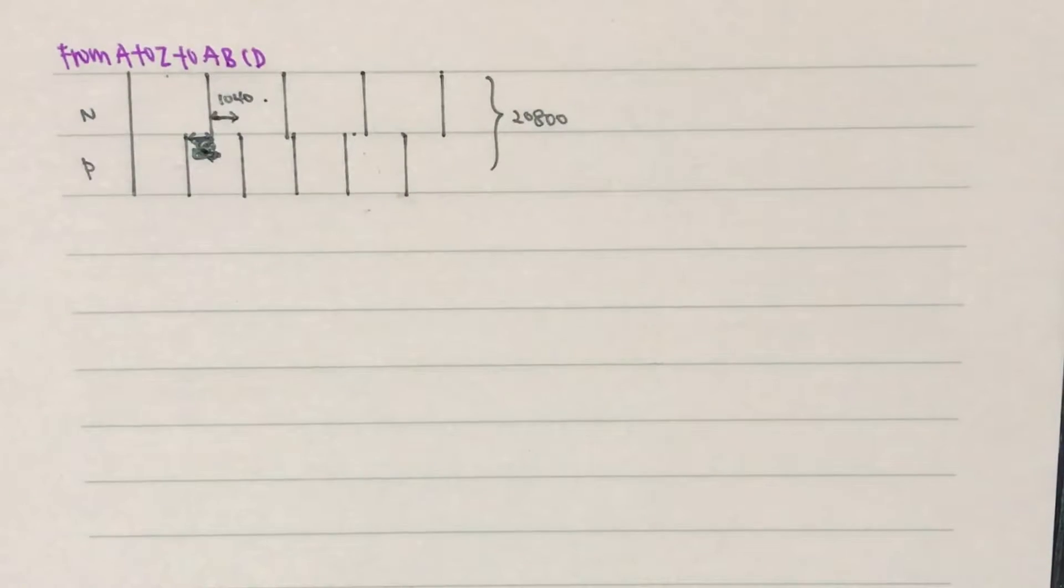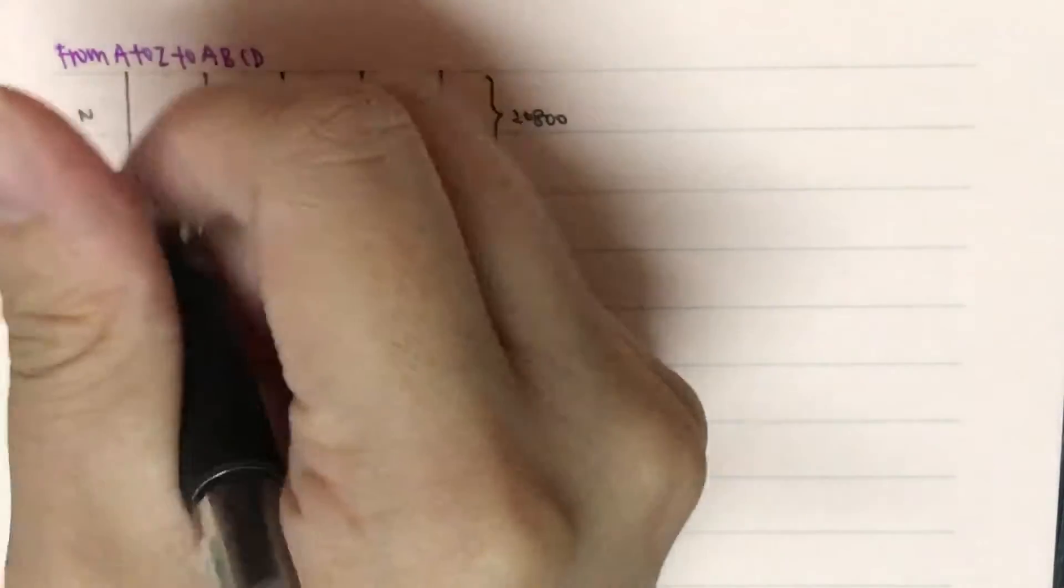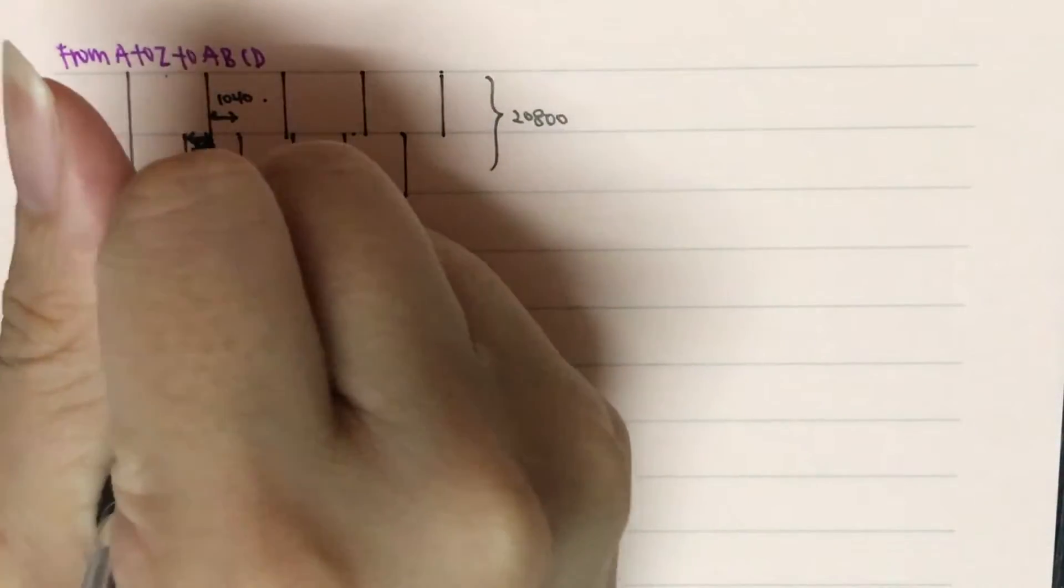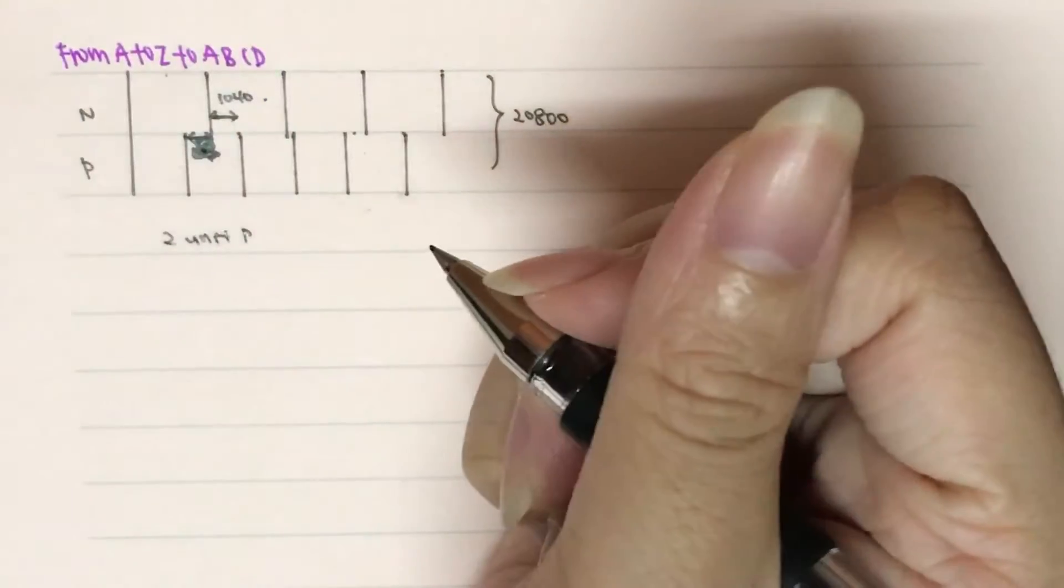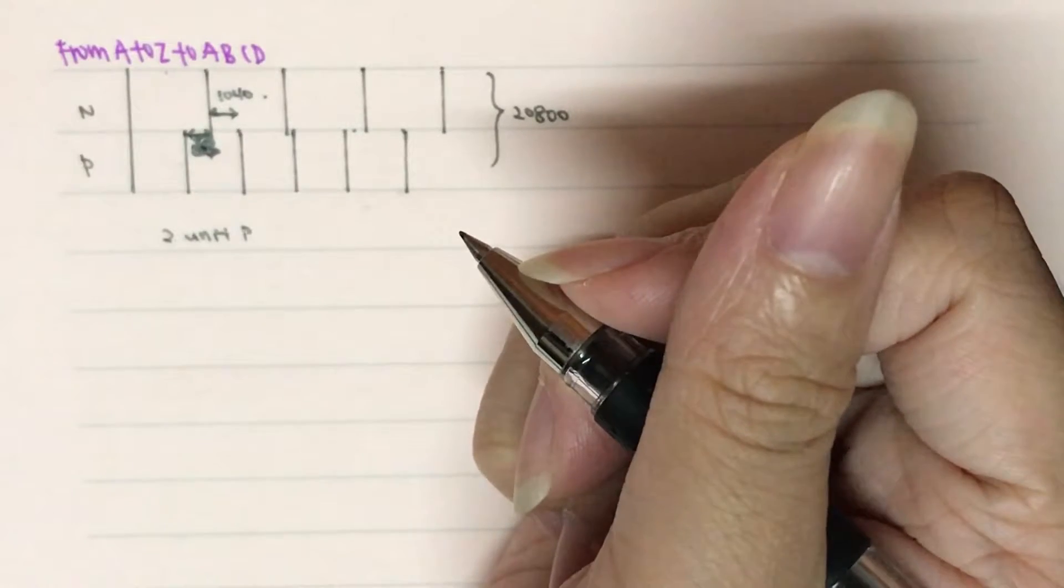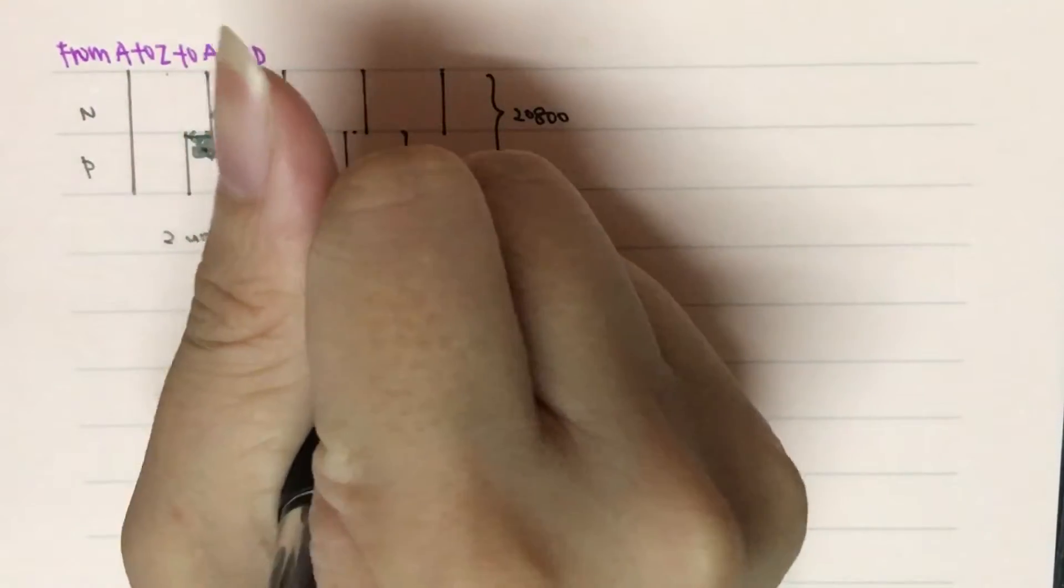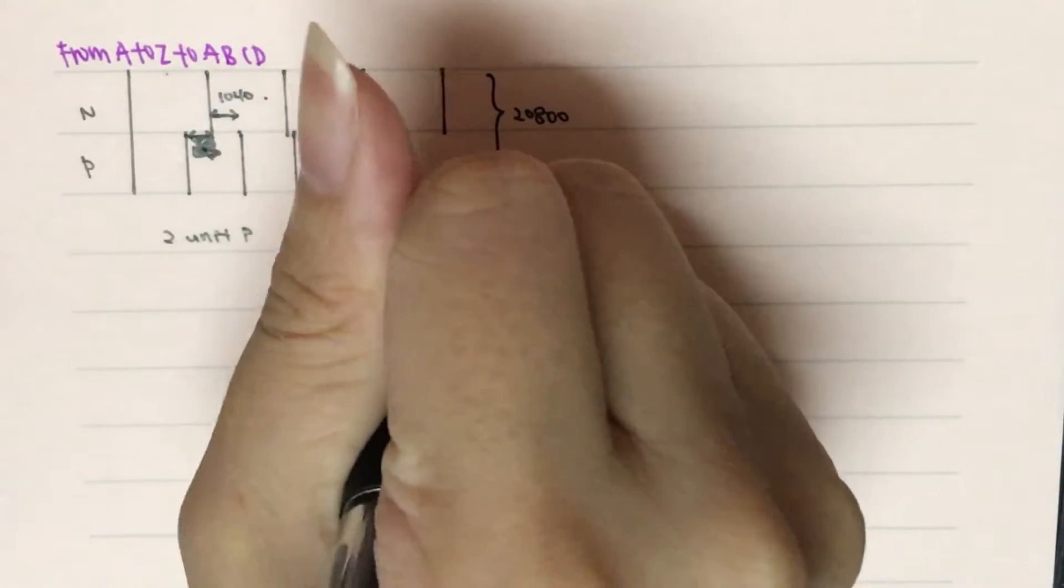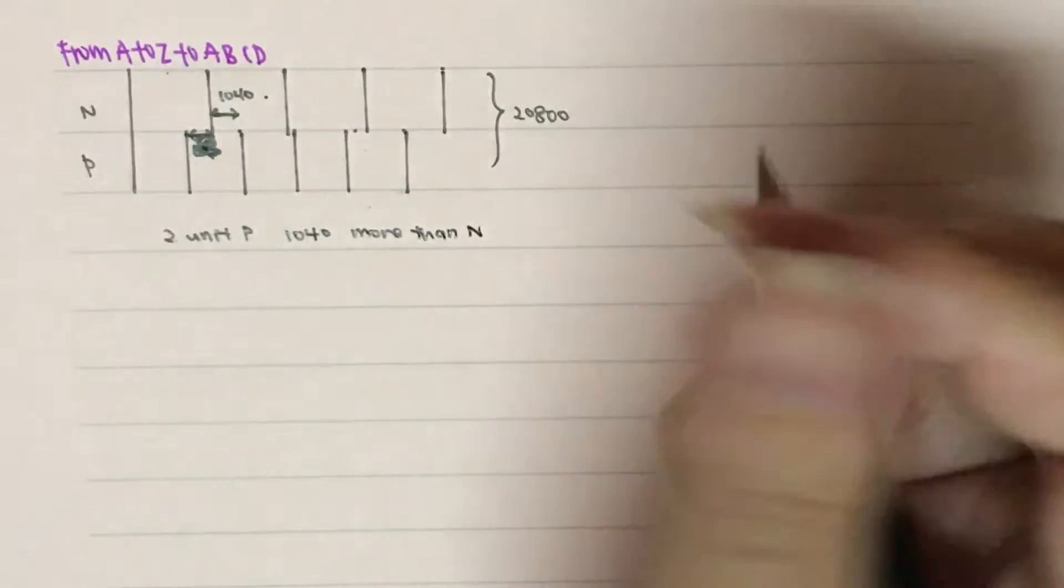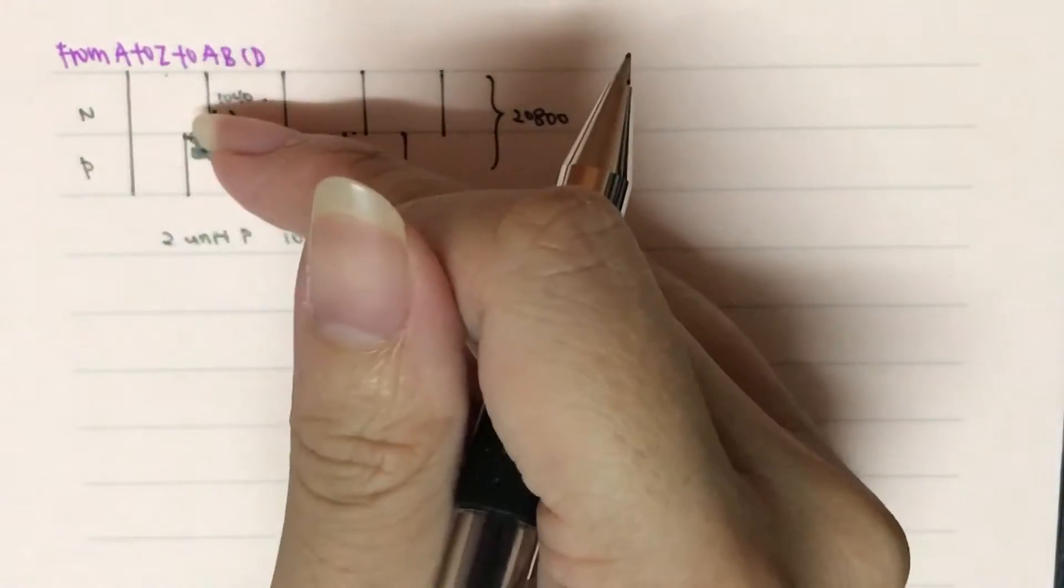Then we realize that for every two units of P, it's actually 1,040 more. So, every two units of P equals to one unit of N plus 1,040. This is what they're trying to say.